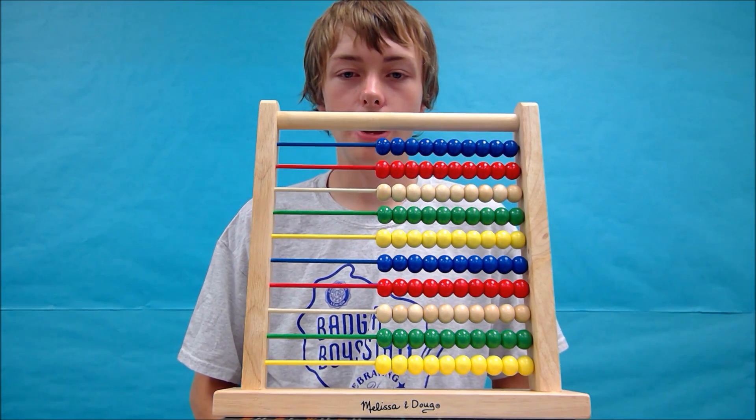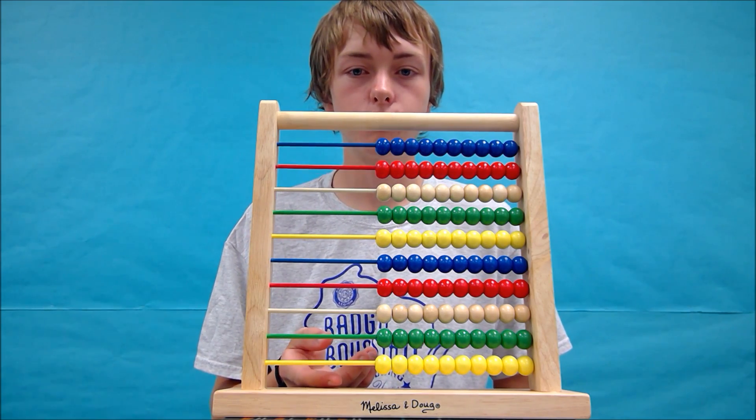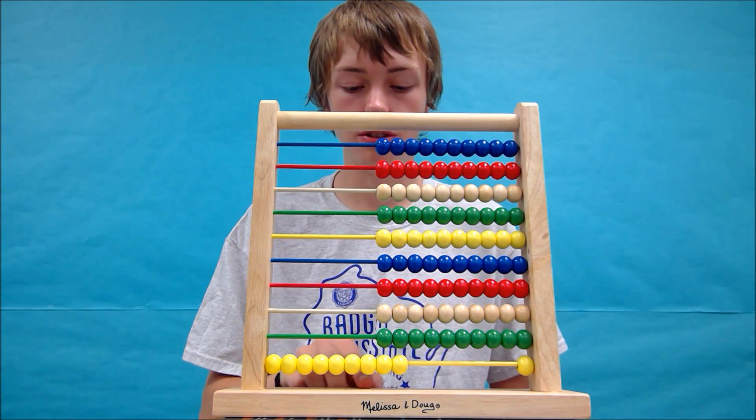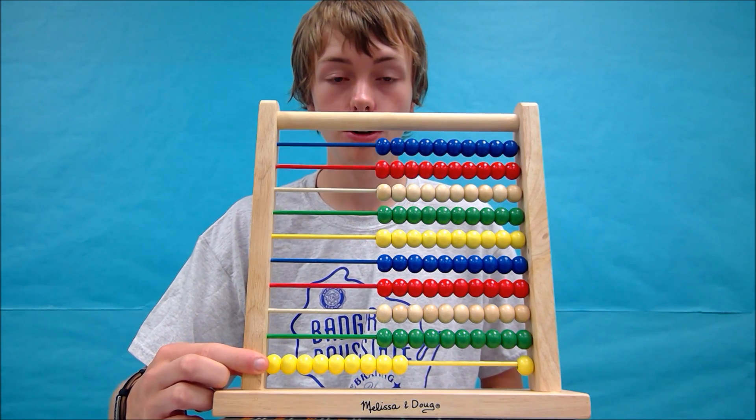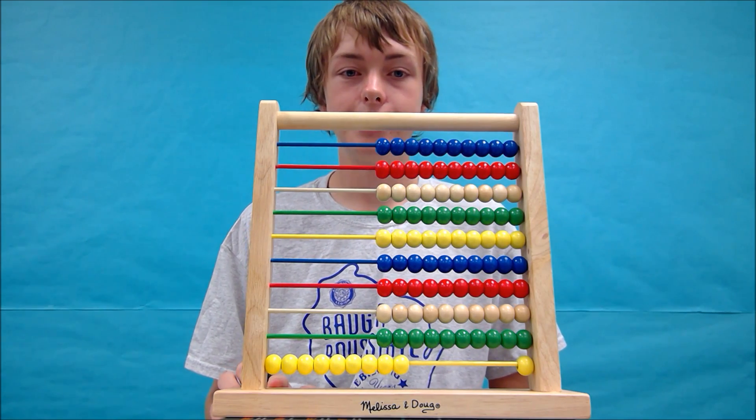Alright, we're going to try 9 plus 6. Again, like we did in the first problem, we will move 9 yellow beads over because they are the ones beads. So we have 9 and we're going to add 6 to that.